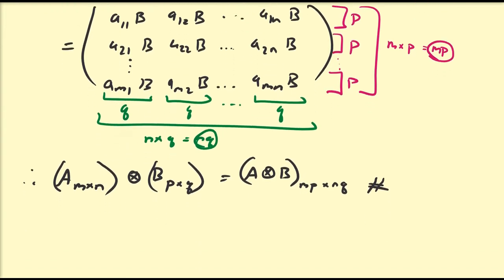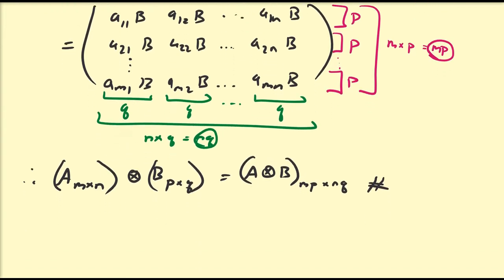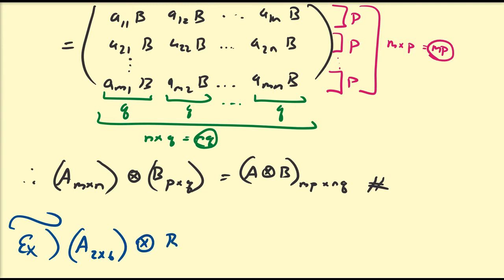As a basic calculation: suppose we take the Kronecker product of a 2×6 matrix with a 3×4 matrix. The resulting dimensions would be 2×3 by 6×4, which is 6 by 24. So this would be a 6×24 matrix.